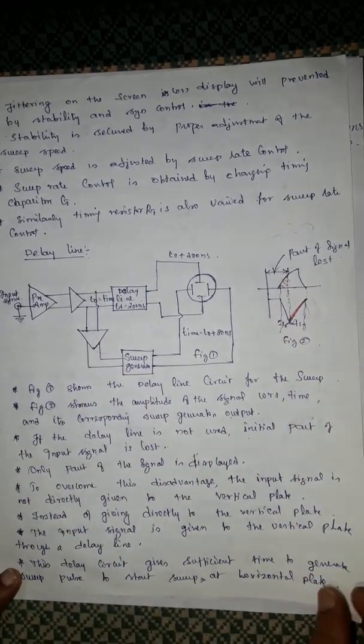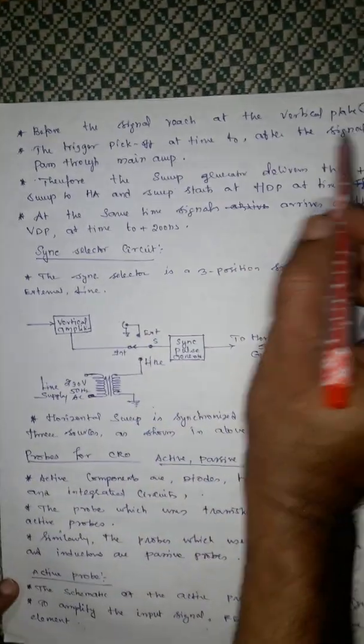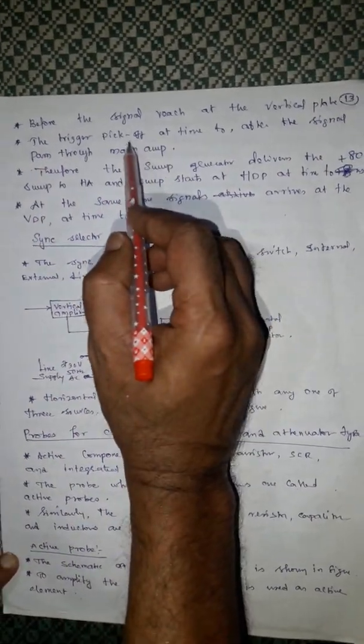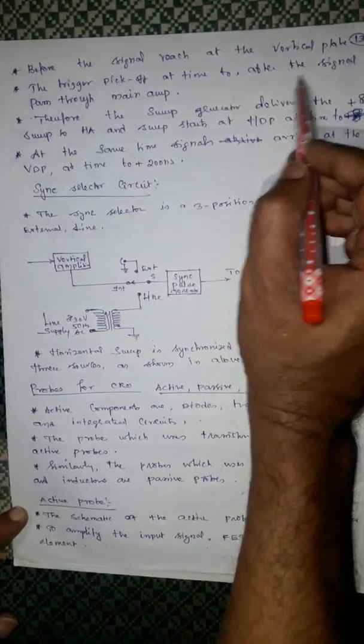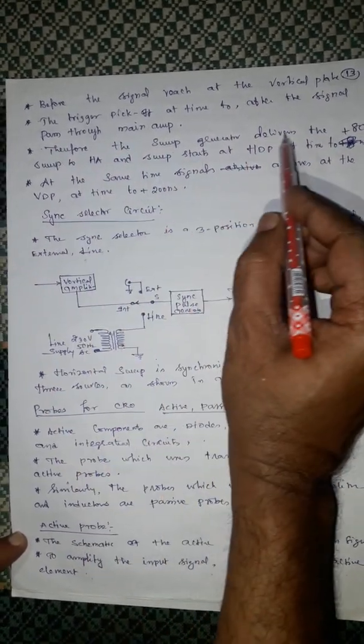Because of this delay, this gives sufficient time to start the sweep at horizontal plate before the signal reaches the vertical plate. The trigger picks off at a time after signal passes through the main amp.